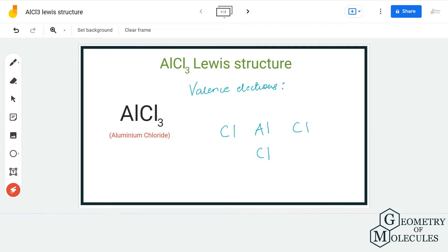Hi guys, welcome back to our channel. In today's video we are going to do the Lewis structure for AlCl₃ molecule. It is the chemical formula for aluminum chloride, and to determine its Lewis structure we will first start with valence electrons.